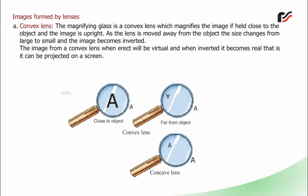Images formed by lenses: Convex lens: The magnifying glass is a convex lens which magnifies the image if held close to the object and the image is upright. As the lens is moved away from the object, the size changes from large to small and the image becomes inverted. The image from a convex lens when erect will be virtual, and when inverted it becomes real, meaning it can be projected on a screen.